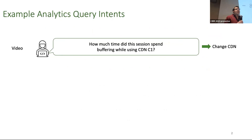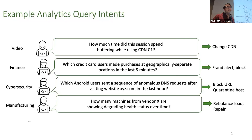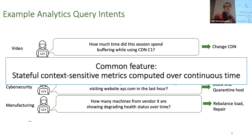Let's start with some example queries that drive operations across various markets. In video, CANDIVA monitors measurements from video players to detect problems with a particular content distribution network, and might tell the player to stream to a different CDN. A credit card company might check for fraud by finding users who made purchases at multiple distant locations in a short period of time. A manufacturer might search for machines showing degrading health by integrating data from multiple sensors. The common feature is stateful, context-sensitive metrics computed over continuous time.